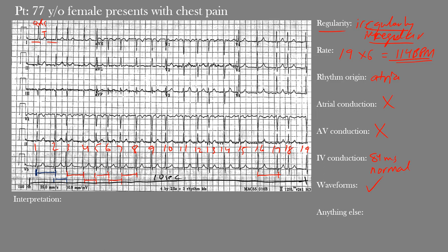Is there anything else we're missing? There is one minor point to be aware of: the baseline is not isoelectric in some areas. This may be due to skeletal interference, or more likely in this case it's due to chaotic atrial activity. If you notice here, the baseline is not flat in places, and that's more likely caused by chaotic atrial activity with no clear atrial contractions or atrial depolarization, which is consistent with us being unable to make out any P waves.